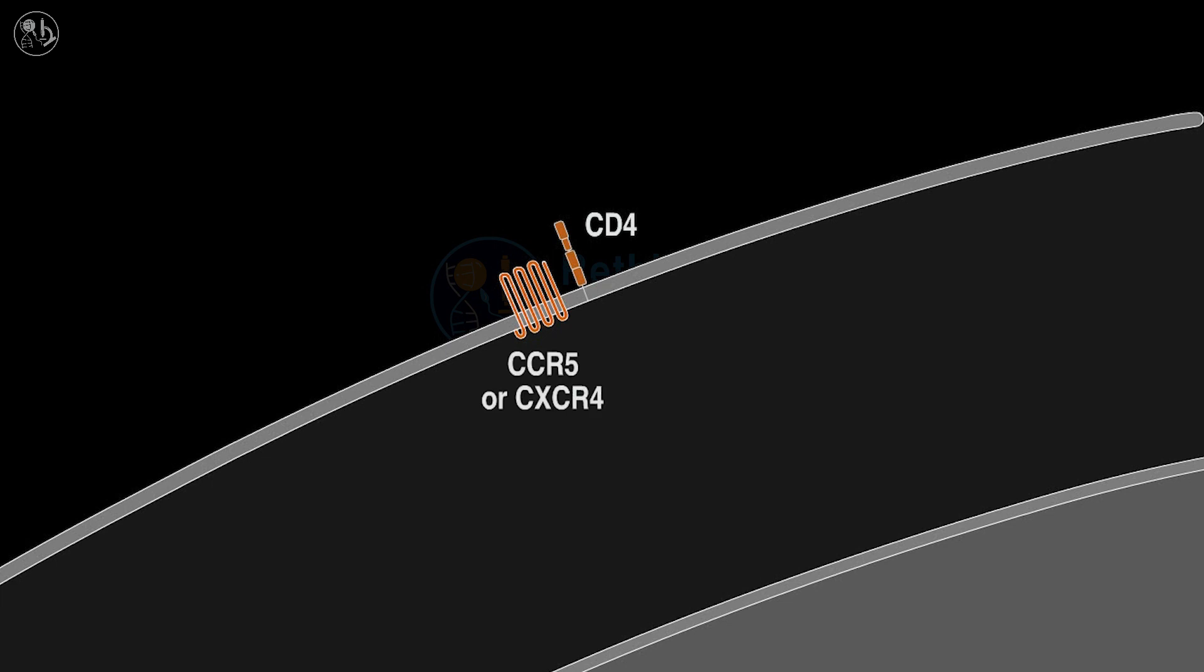CCR5 and CXCR4 enable the viral invasion of macrophages and T cells respectively. The virus initially binds to CD4 through the envelope glycoprotein GP120.